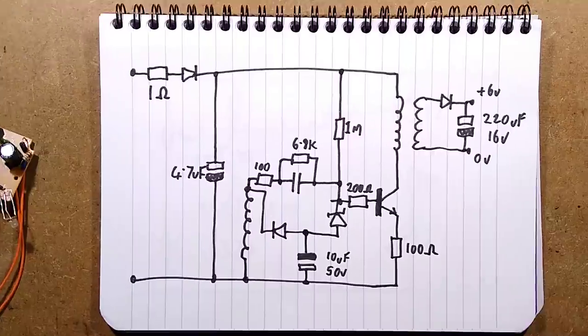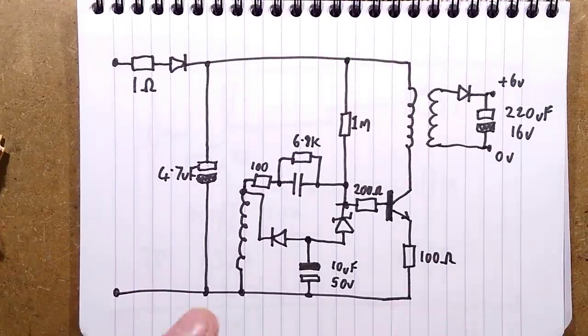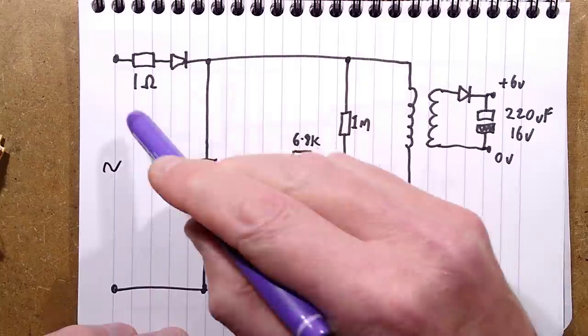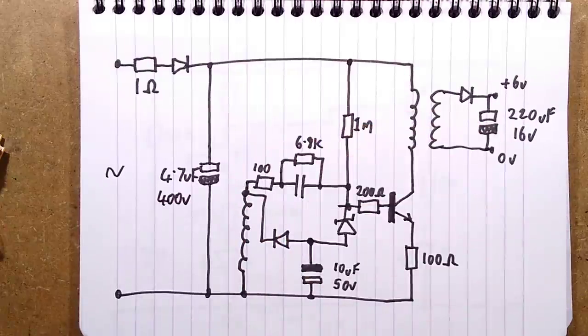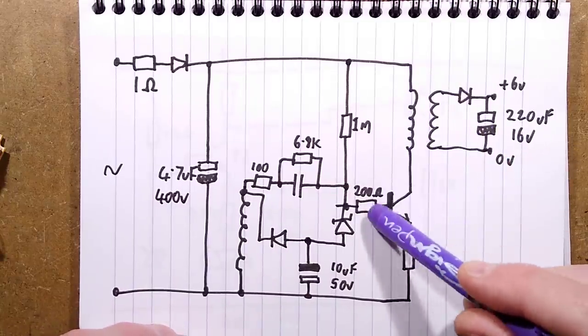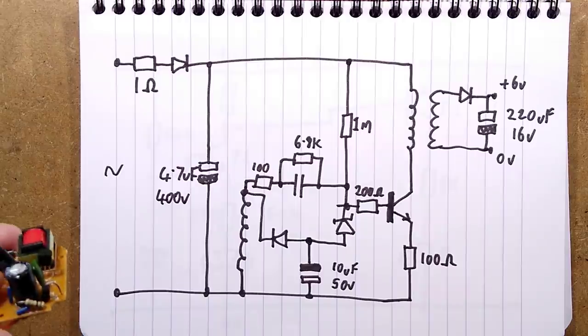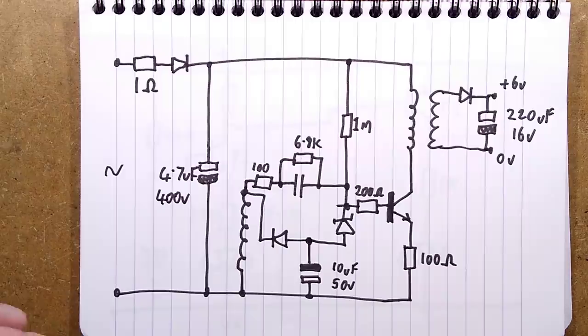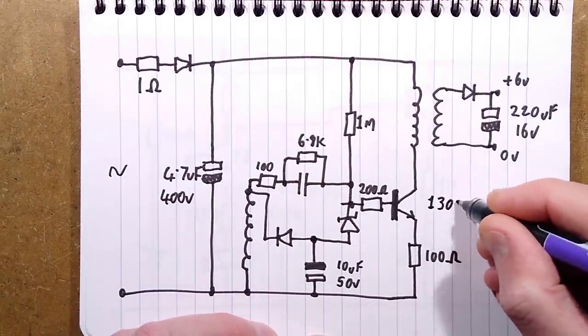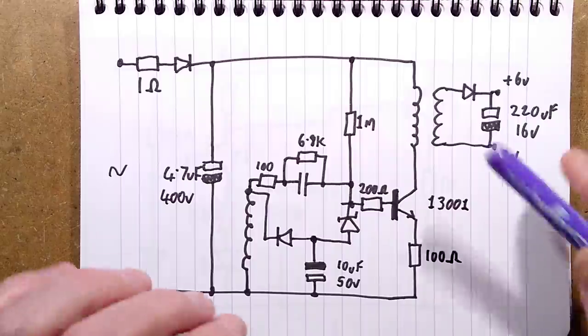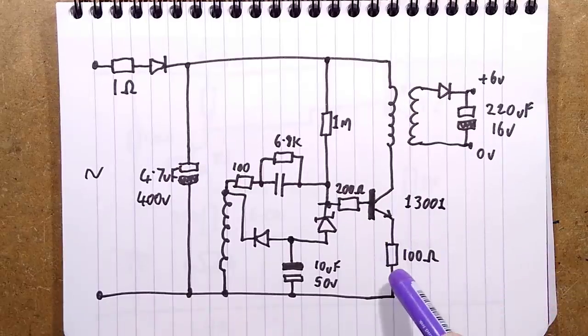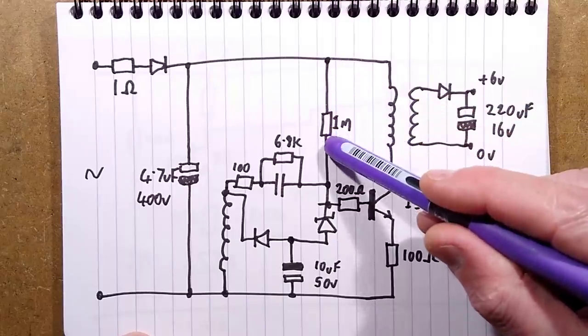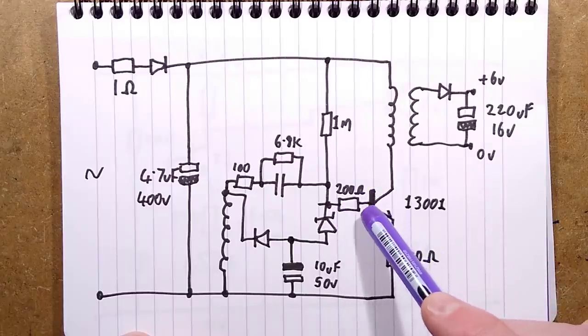Here's the incoming supply, the mains, the AC. It goes via a 1-ohm resistor and a single diode to a 4.7 microfarad 400-volt capacitor. That then goes to the one end of the primary winding, which then goes to the transistor. It's a 13001, that's very common in these. And then on the emitter of that transistor, which is a standard NPN transistor, a fairly high voltage NPN transistor, is a 100-ohm resistor. When the circuit initially powers up, current flows through this 1-megohm resistor and this 200-ohm resistor and starts turning this transistor on.